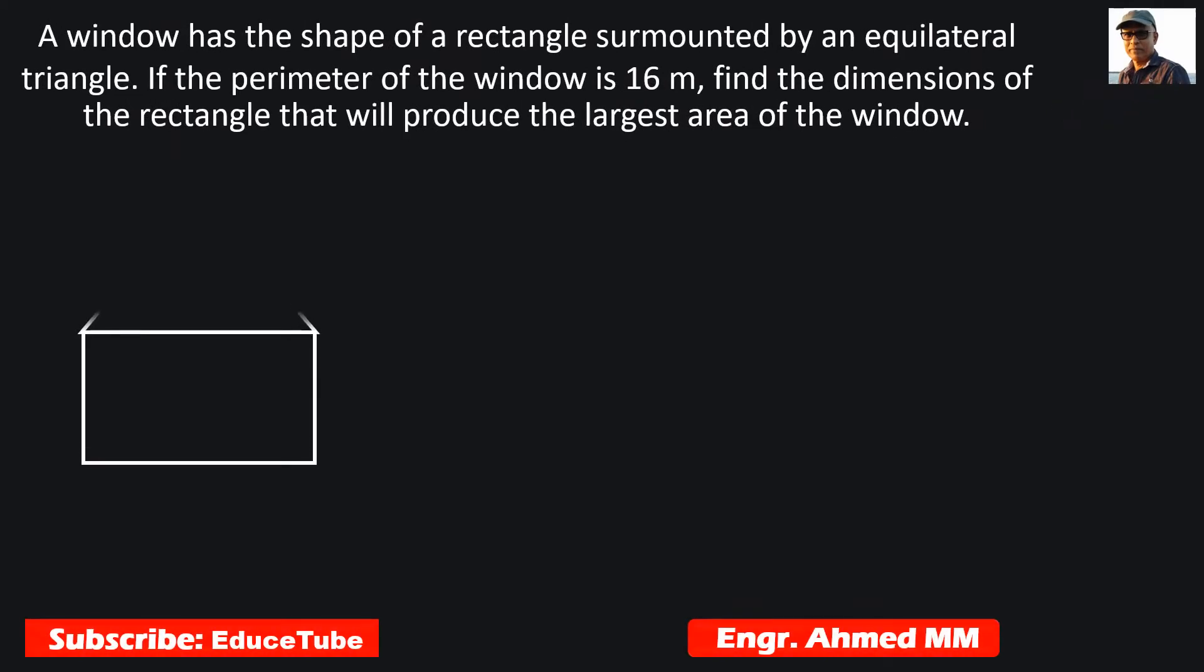Hi everybody, here we have a window which has the shape of a rectangle surmounted by an equilateral triangle. The perimeter of the window is 16 meters, so we need to find the dimensions of the rectangle that will produce the largest area of the window to get the maximum amount of light.